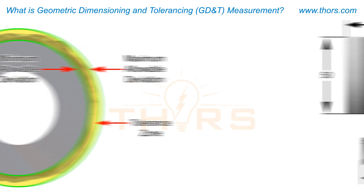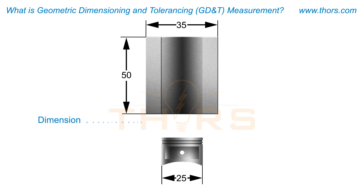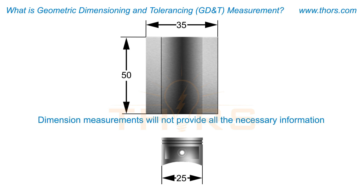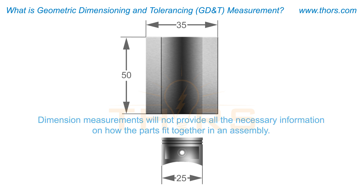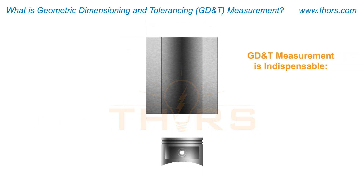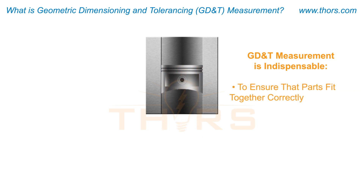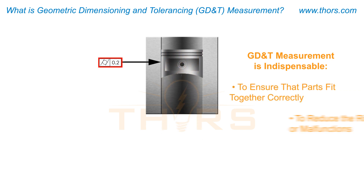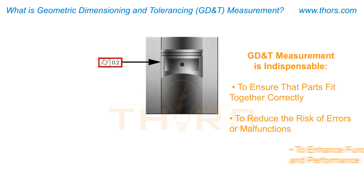In many engineering applications, dimension measurements will not provide all the necessary information on how the parts fit together in an assembly. Therefore, GD&T measurement is indispensable to ensure that parts fit together correctly during assembly, to reduce the risk of errors or malfunctions, and to enhance the functionality and performance of the final product.